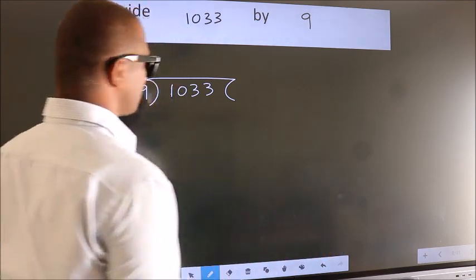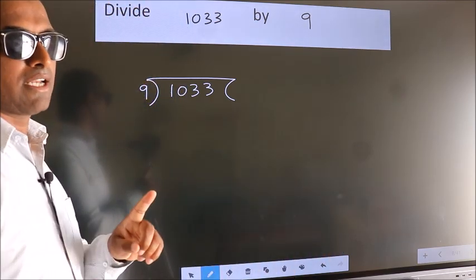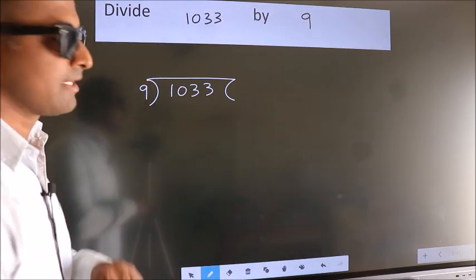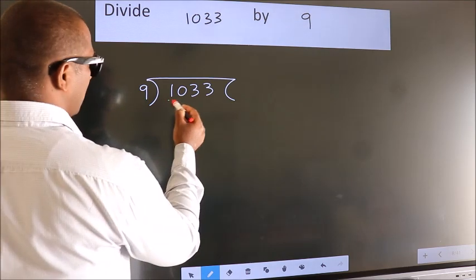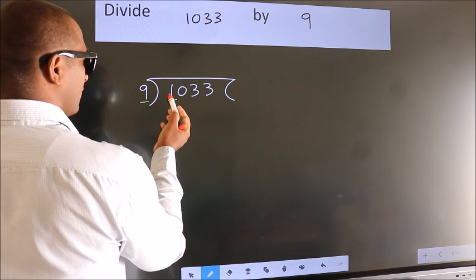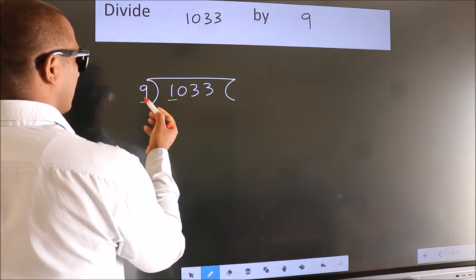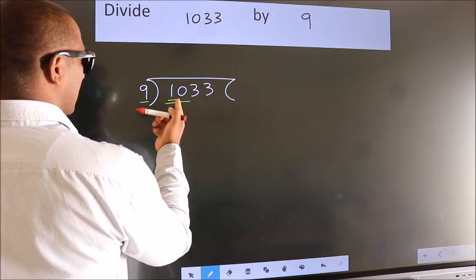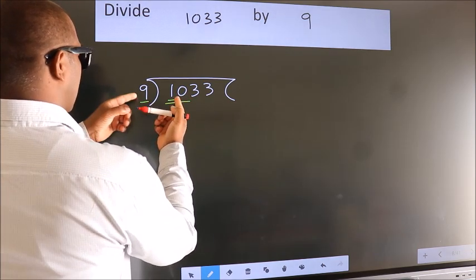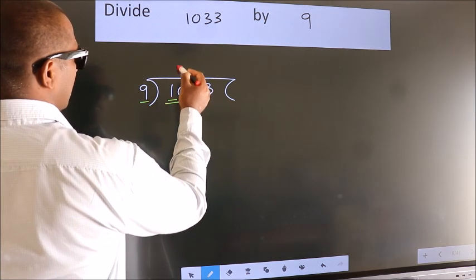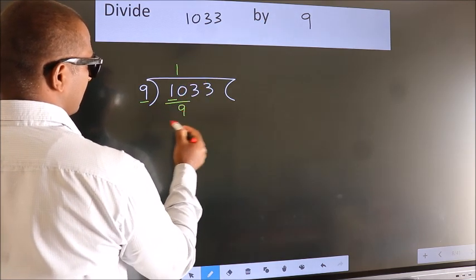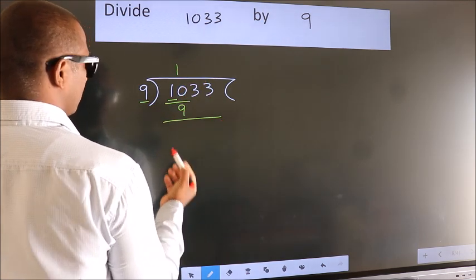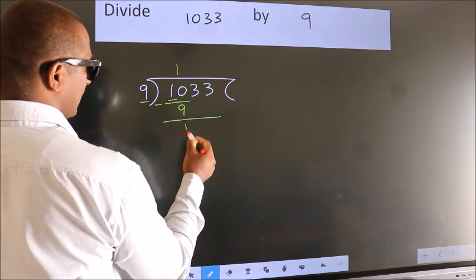This is your step 1. Next, here we have 1, here 9. 1 smaller than 9. So we should take two numbers, 10. A number close to 10 in 9 table is 9 ones, 9. Now we should subtract. We get 1.